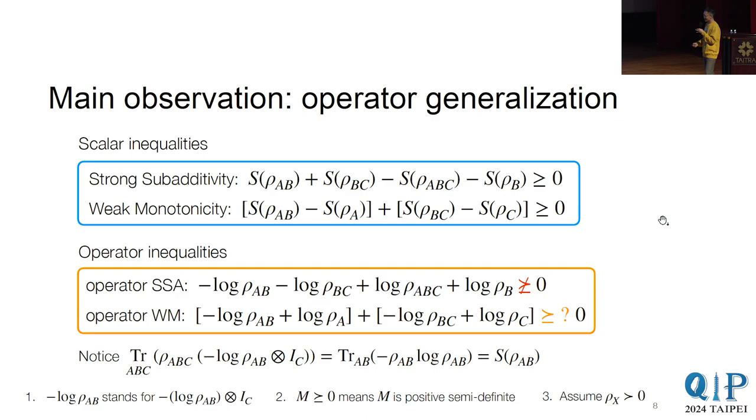But the question is, does these operator inequality hold? Because intuitively, these operator inequalities, they're much stronger. So in general, you shouldn't expect them to hold. And indeed, the first inequality is actually false, unsurprisingly. But the surprising thing is that the second inequality is actually true. Yeah, so that's the main result of this paper, and we'll now prove it.